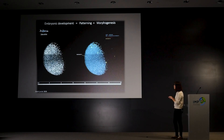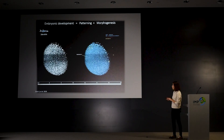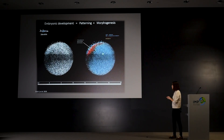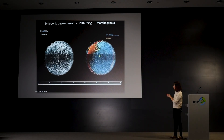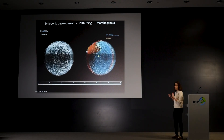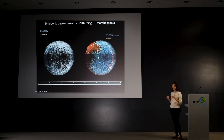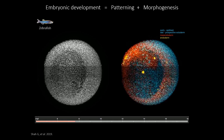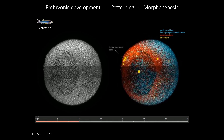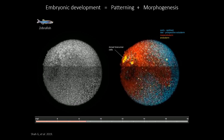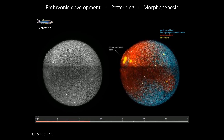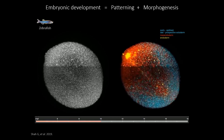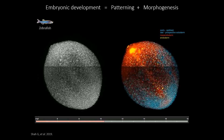Once this movie starts playing you can appreciate just the complexity of this process. Cells are changing colors, meaning they're acquiring different fates, but they're also doing a number of other things — there are cell divisions, cells rearrange, and they change their shape.